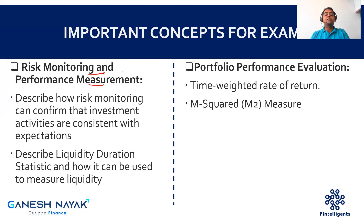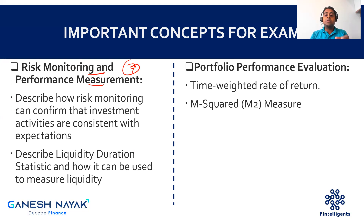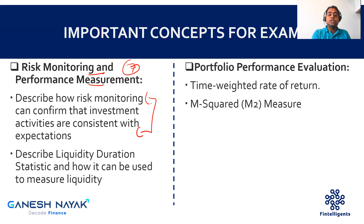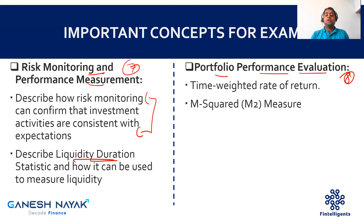Chapter seven is risk monitoring and performance. The logic is: you've already created a portfolio and talked about its risk — now how do you keep tracking and monitoring the risk so it achieves your risk appetite level and return objectives? I've highlighted certain basic concepts from the start of the chapter, and also the liquidity duration logic, which is important for the exam.